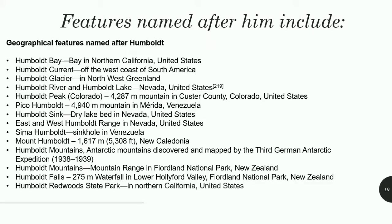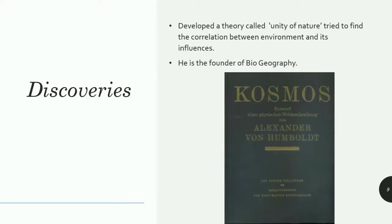Darwin was greatly influenced by his discoveries, and once said that Alexander von Humboldt was another sun of his knowledge. Darwin followed the same path, went to the Amazon, and the Origin of Species came out. Unfortunately, that same year — 1859 — Alexander von Humboldt passed away, exactly the year Origin of Species was published.